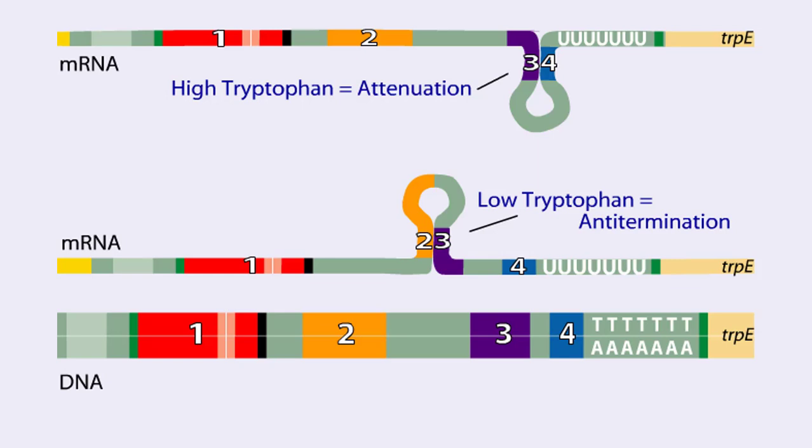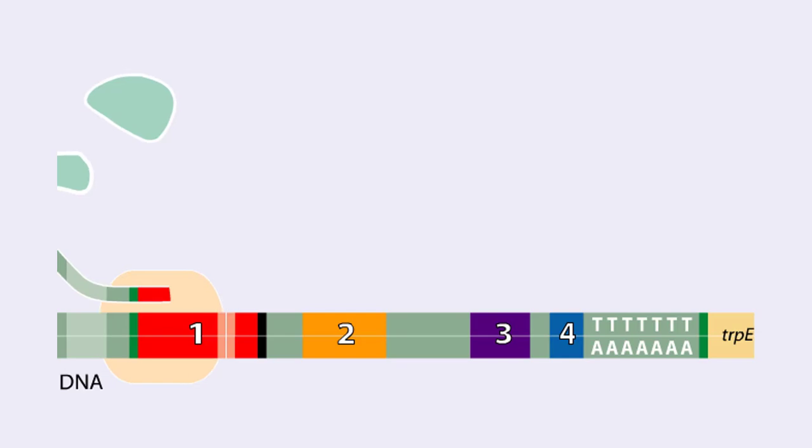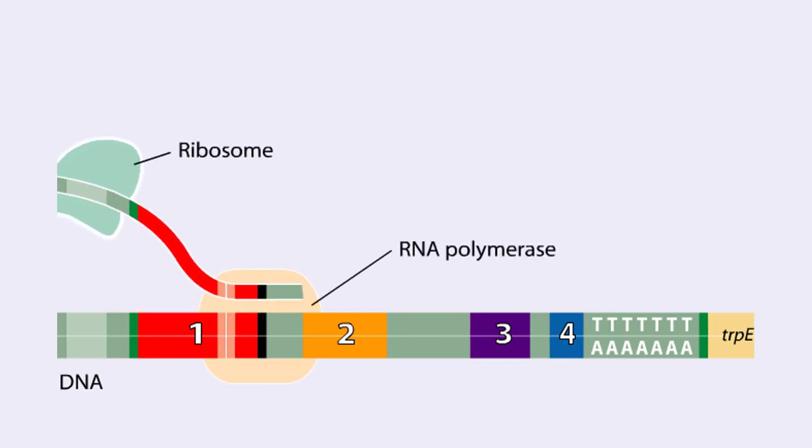Let's examine how these alternate structures arise. RNA polymerase begins transcribing the DNA. Closely following RNA polymerase, a ribosome begins to translate region 1.